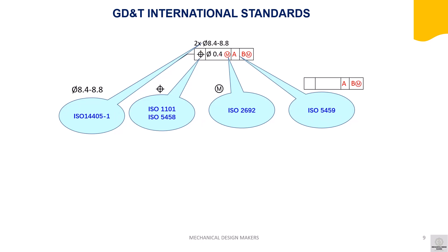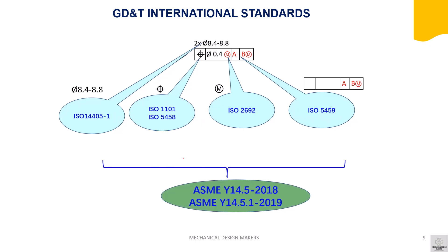There are numerous substandards for ISO GPS. For example, to understand size tolerance such as diameter, you need ISO 14405-1. For position tolerance, you need ISO 1101, and for some pattern positions, ISO 5458. For the maximum material modifier, you need ISO 2692. For datum definitions, you need ISO 5459. In contrast, all definitions regarding geometric tolerance can be found in one standard: ASME Y14.5 2018, followed by 14.5.1 2019.